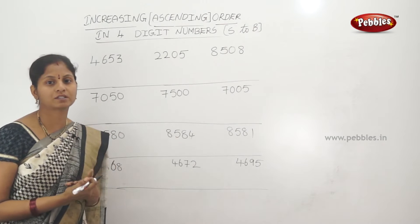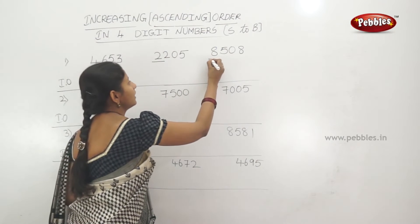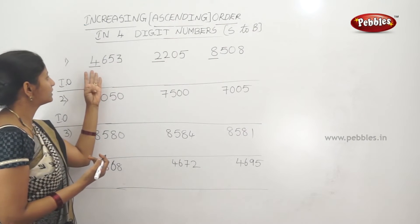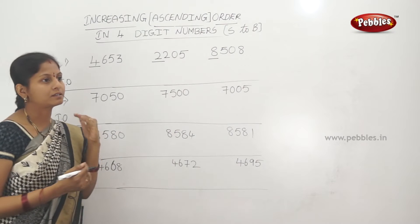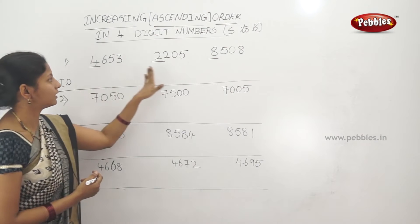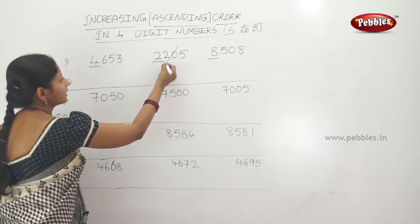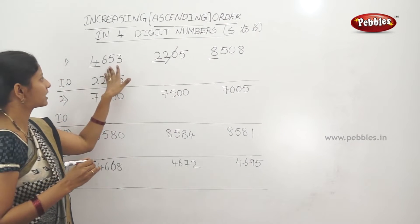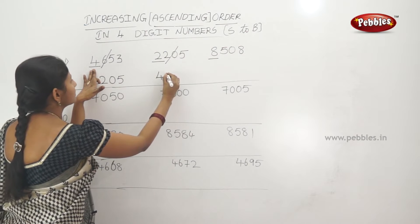We start by comparing the starting digits. The starting digits are 4, 2, and 8. The smallest starting digit is 2, so 2,205 is the smallest number. Next, comparing 4 and 8, 4 is smaller. So the next number is 4,653.